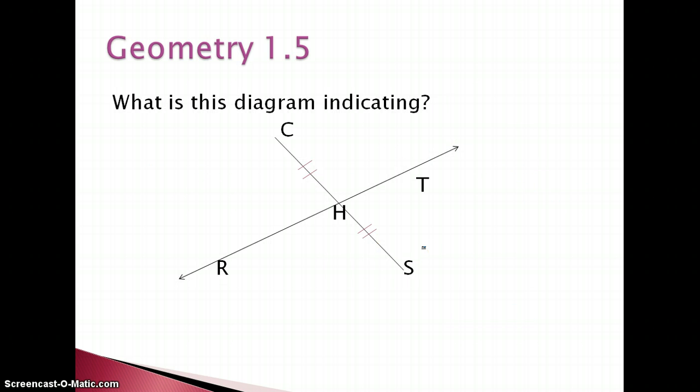What is this diagram indicating? So we see our tick marks that we learned indicate congruence, so this is telling us that CH is congruent to segment HS. What else can this tell us? Well, it can also tell us that line RT is a bisector.